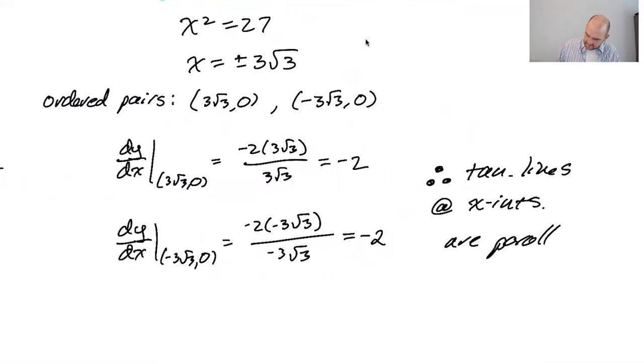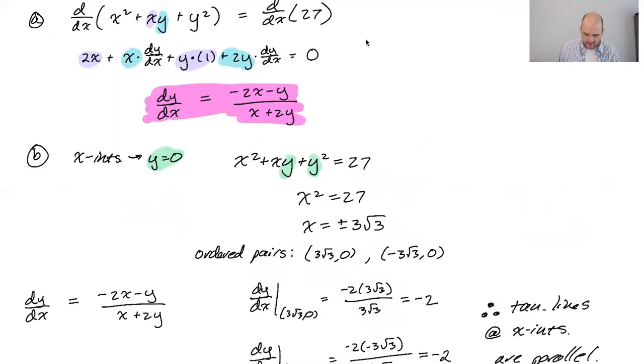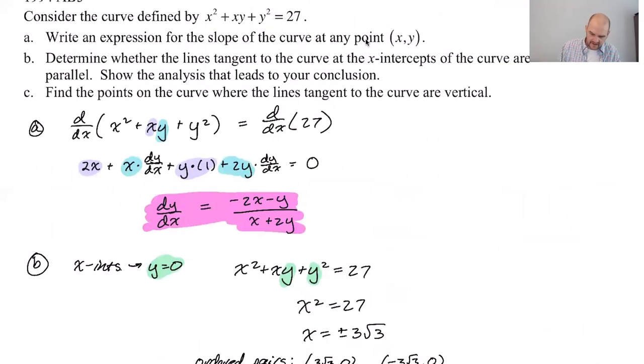Therefore the tangent lines at the x-intercepts are parallel. So if we had gotten different slopes, they would have not been parallel. It's like pretty straightforward conclusion, but you know, got to think it through.